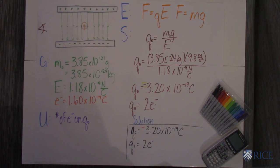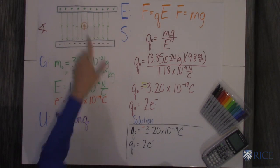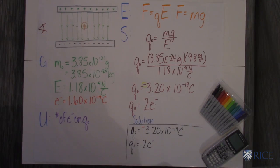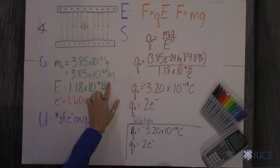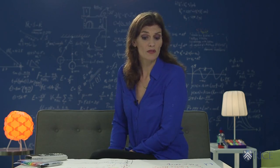You know the mass of the charged particle. The mass is 3.85 times 10 to the negative 21 grams. I always put everything in standard units, so it's 3.85 times 10 to the negative 24 kilograms.